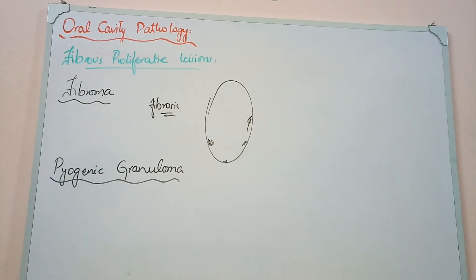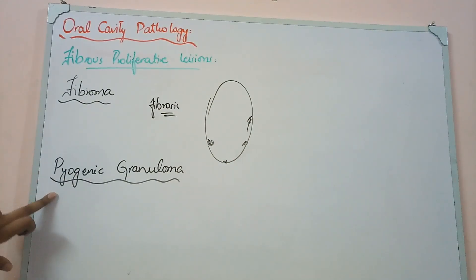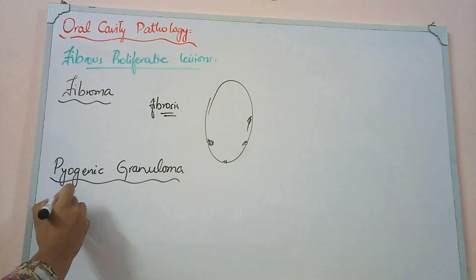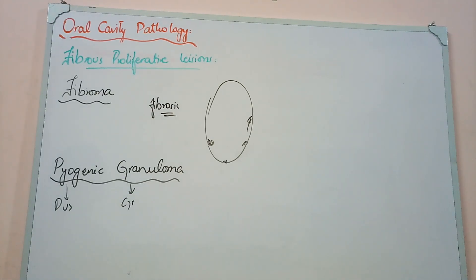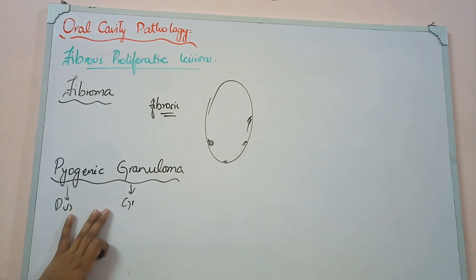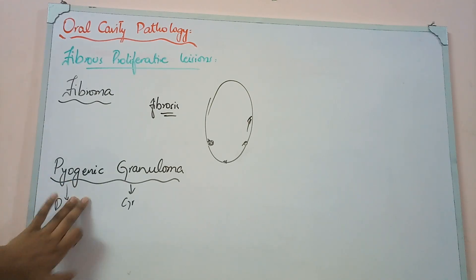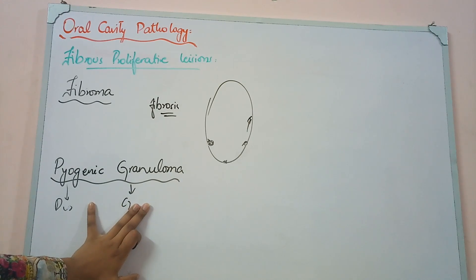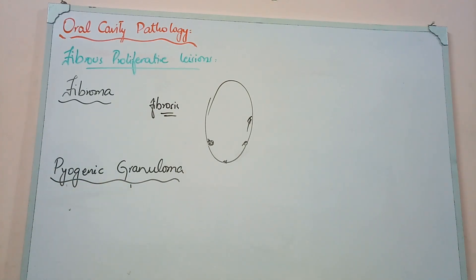To treat fibroma, we simply remove it surgically and it typically does not recur. Pyogenic granuloma — despite its name — is actually a misnomer. It is not truly pus-producing, and it does not form true granulomas. It is basically a type of capillary hemangioma.